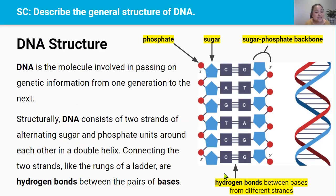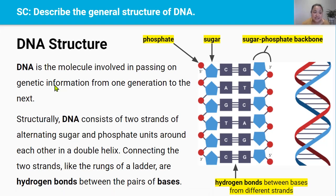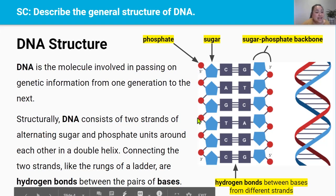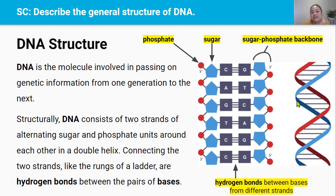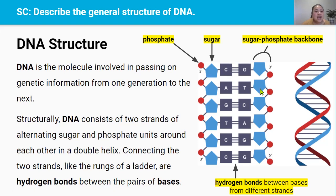Deoxyribonucleic acid, or DNA for short, is the chemical molecule involved in passing on genetic information from one generation to the next. Structurally, this DNA consists of two strands of alternating sugar and phosphate units wound around each other in a double helix. This red ribbon represents the sugar phosphate backbone on the left hand side, and the blue ribbon represents the sugar phosphate backbone on the right hand side. Connecting the two strands, like rungs of a ladder, are hydrogen bonds between the bases.